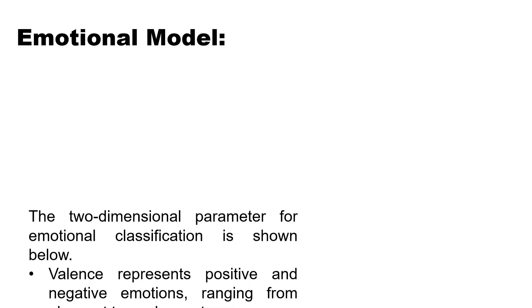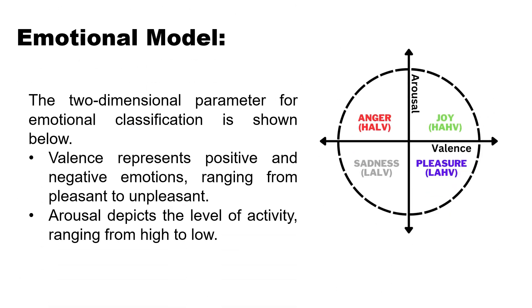Now let us have a look at the emotional model. This is James Russell's 2D emotional model, a two-dimensional parameter for emotional classification. Valence represents positive and negative emotions ranging from pleasantness to unpleasantness, and arousal depicts the level of activity ranging from high to low.